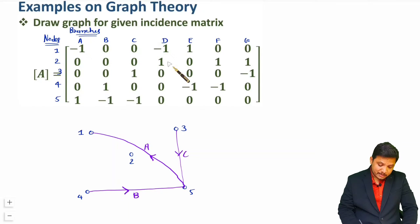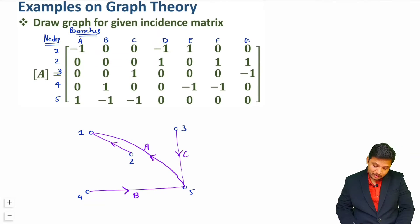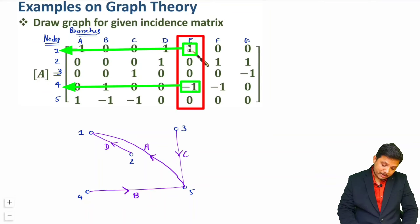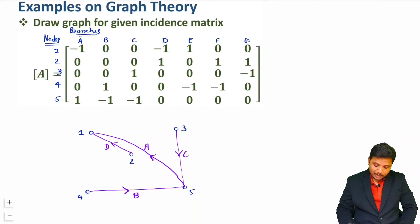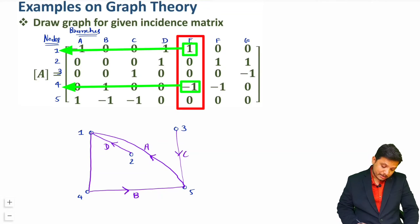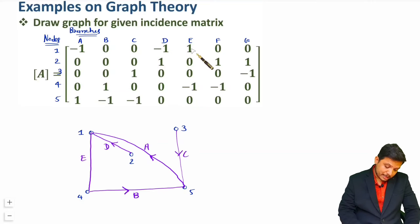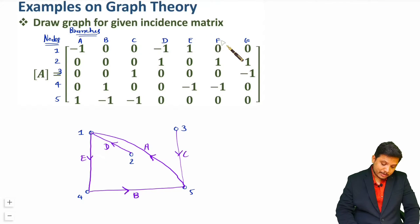Branch D is there in between nodes 1 and 2. Let me connect one branch between 1 and 2. Node 2 is having plus 1, so direction will be from 2 to 1 — that is branch D. Now branch E is there in between nodes 1 and 4. Node 1 is having plus 1, so direction will be from 1 to 4.